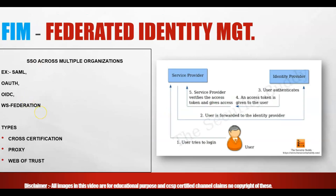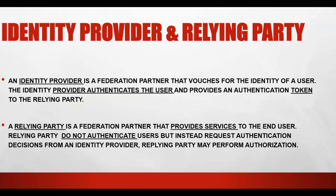FIM has multiple protocols: SAML, OIDC, and WS-Federation. It can be service provider initiated or identity provider initiated. There are two parties — the service provider and the identity provider — who are in a circle of trust. They use cross-certification, web of trust, or proxy. The identity provider performs authentication and issues tokens; the relying party provides services and performs authorization but does not authenticate the user.